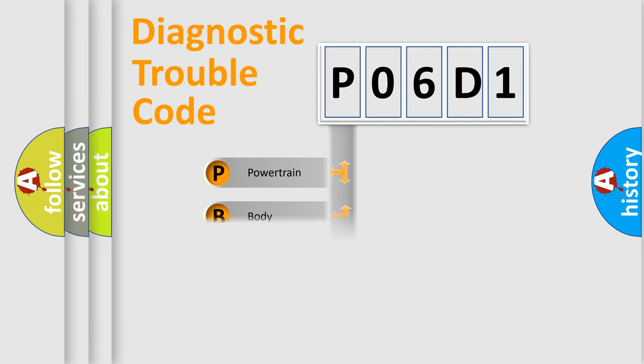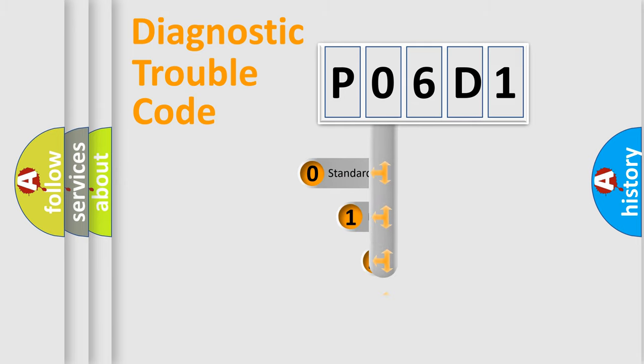Powertrain, body, chassis, network. This distribution is defined in the first character code.